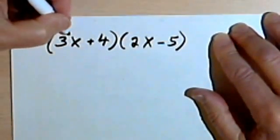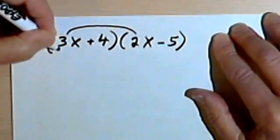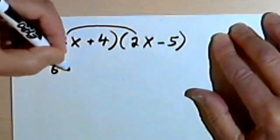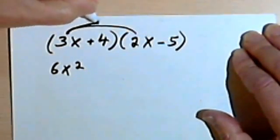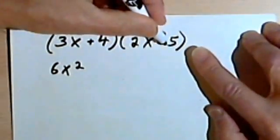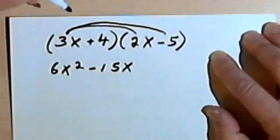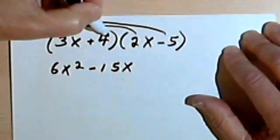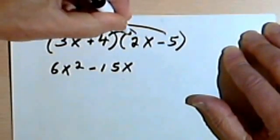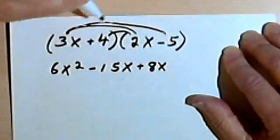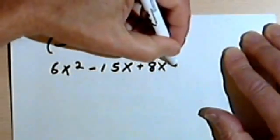There's a fairly orderly way to do this. We're going to start with the first term times the first term — that gives us 3 times 2 is 6, and x times x is x squared. Now the first term times the second term of the second binomial: 3 times negative 5 is negative 15, so since it was 3x, it becomes negative 15x. Then the second term, the 4, times the first term of the second binomial: 4 times 2x is 8x. And finally the two last terms: 4 times negative 5 is negative 20.